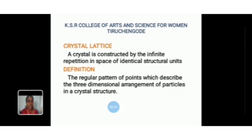Then, crystal lattice. A crystal is constructed by the infinite repetition in space of identical structural units. One can replace each unit by a geometrical point. The result is a pattern of points having the same geometrical properties as the crystal.